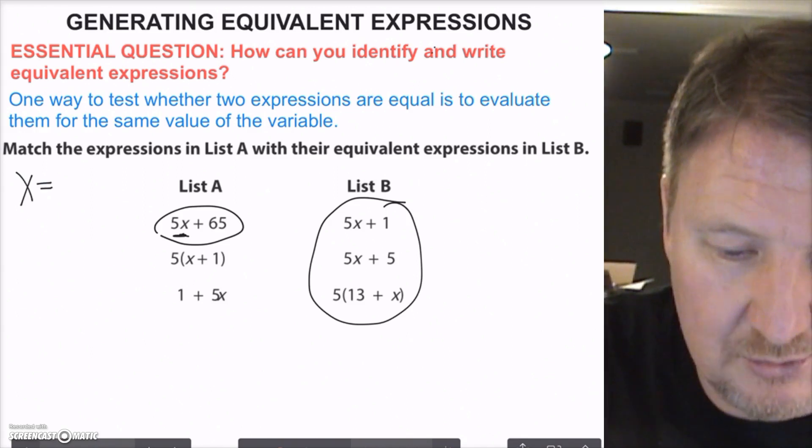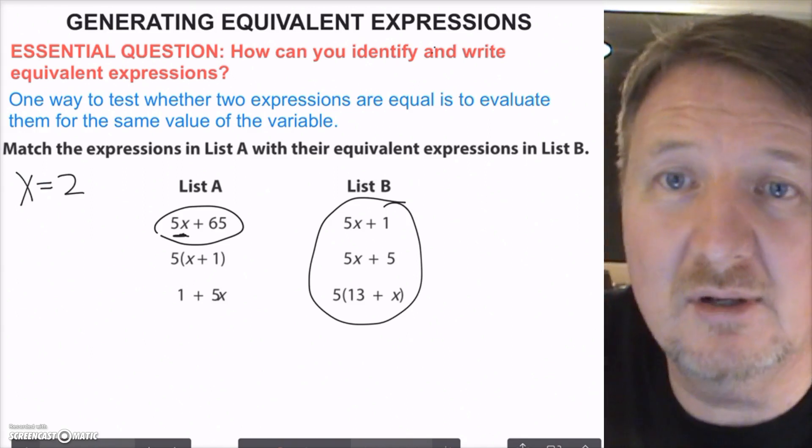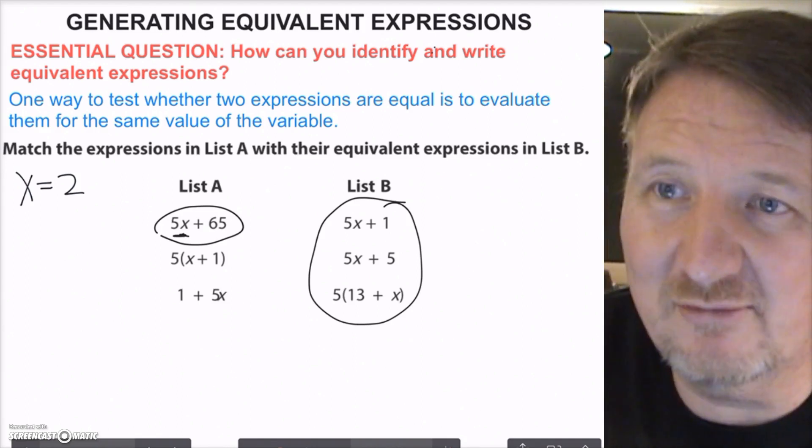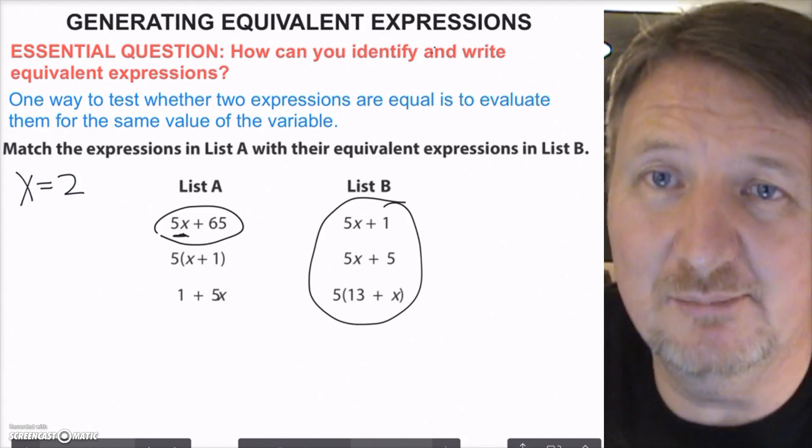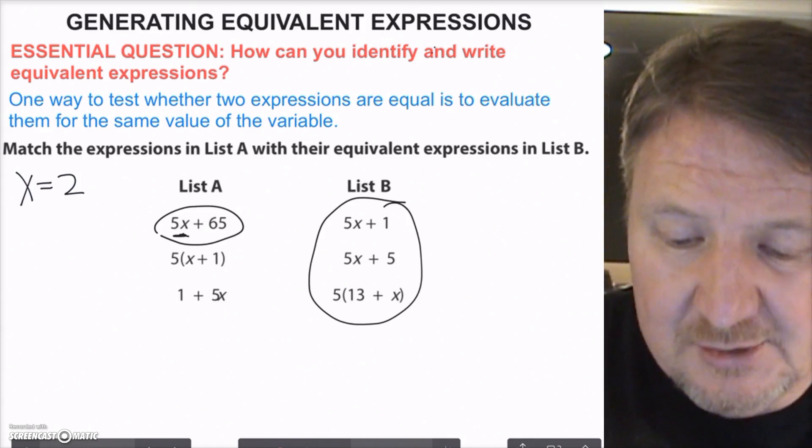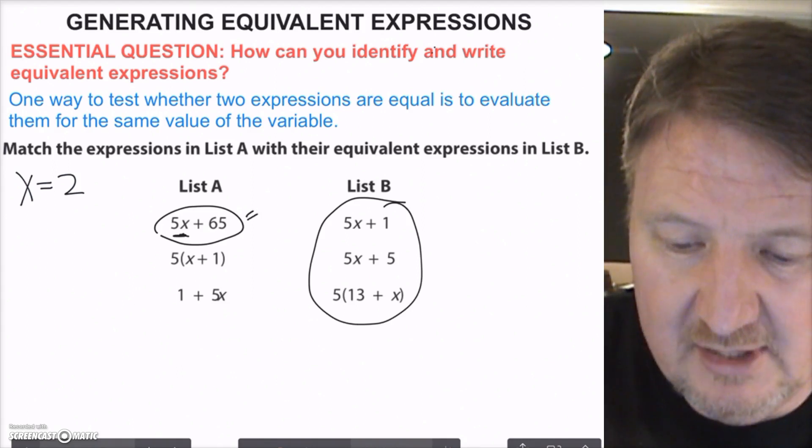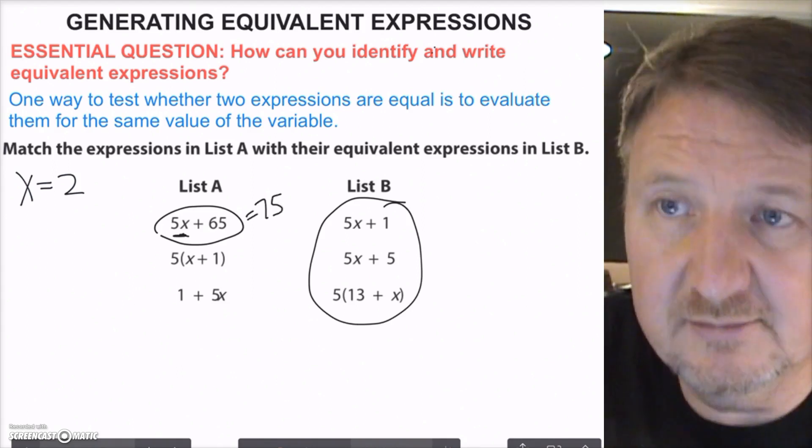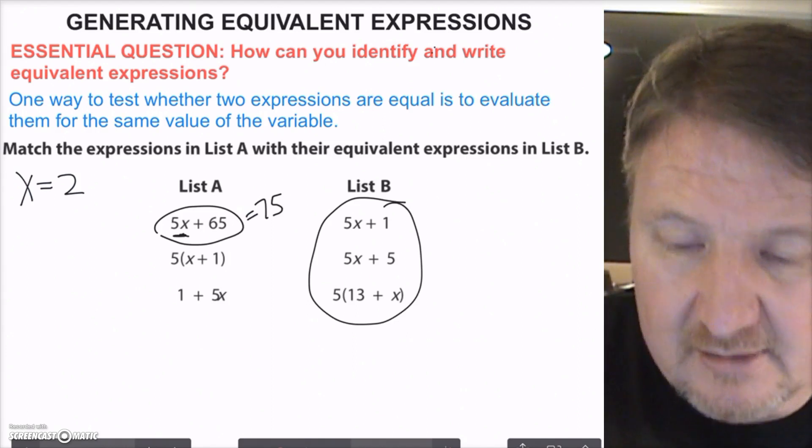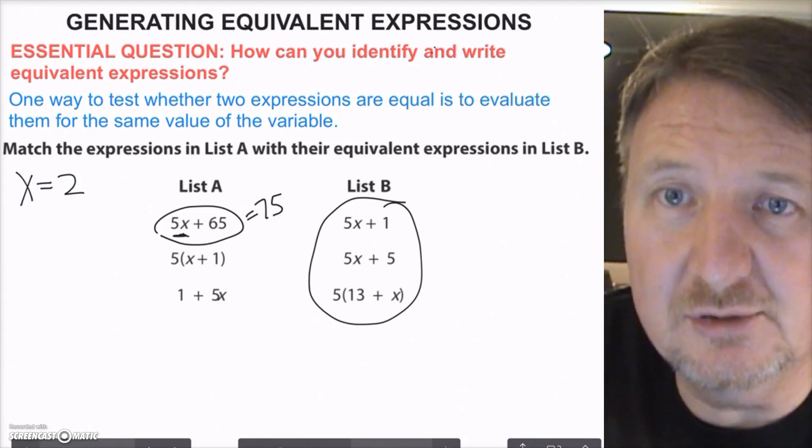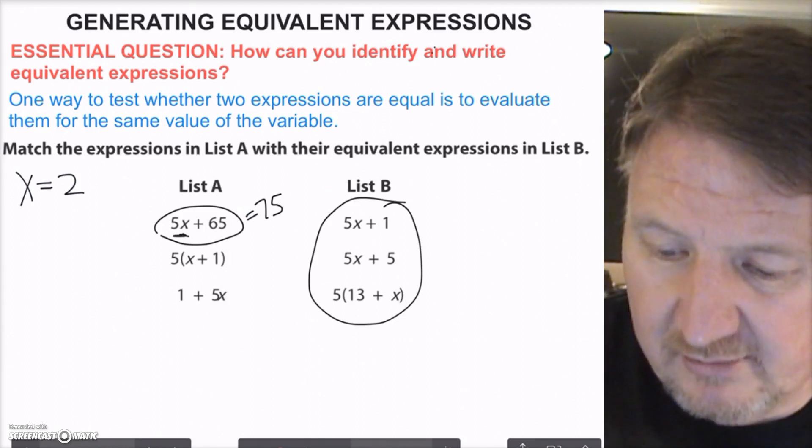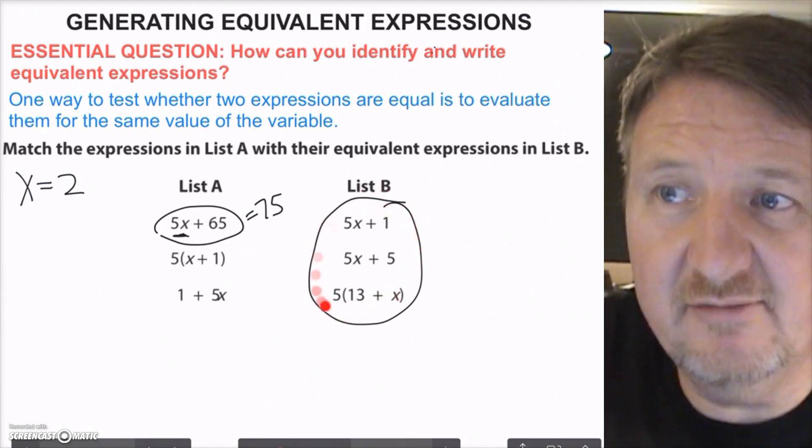Let's just go ahead and say x equals 2. I don't want to make it a big number, I don't want to make it real complicated. It doesn't need to be a decimal or a fraction, just something simple. So if I substitute 2 for x, and I say 5 times 2 is 10, plus 65 equals 75. So that's how much that is equal to when x equals 2. So I want to find one of these expressions over here that is also equal to 75.